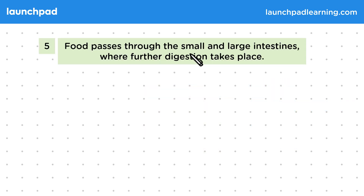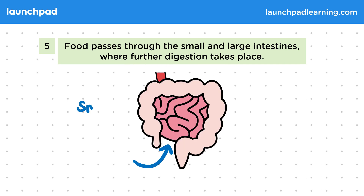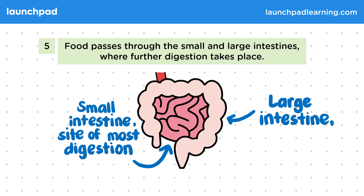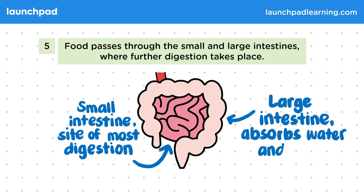Food passes through the small and large intestines where further digestion takes place. The small intestine is a long, narrow tube about seven metres long with rings of muscle that push food through — it's the site of most digestion within this system. After food passes through the small intestine, it moves into the large intestine, which is wider and shorter at about one and a half metres long. The food that enters the large intestine is mainly indigestible fibre and water, and the role of this organ is to absorb water and salts.